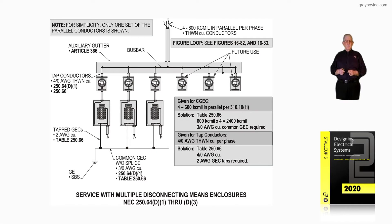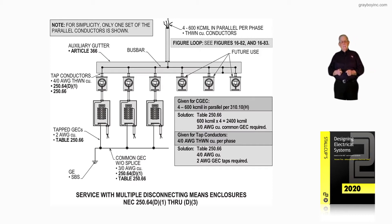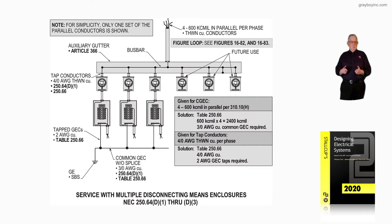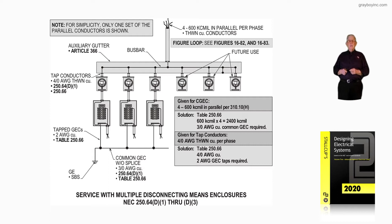This illustration shows service with multiple disconnecting means and closures. Notice in the note it says for simplicity only one set of parallel conductors is shown. The figure loop refers you to additional illustrations with more information — see figures 1682 and 1683.